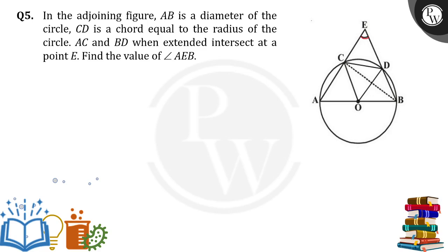So how can we find this angle? It was given that ABDC is a cyclic quadrilateral, and chord CD is equal to the radius of the circle. So we joined O to C and O to D. We have OA equal to OB equal to OC equal to OD, and that is also equal to CD.